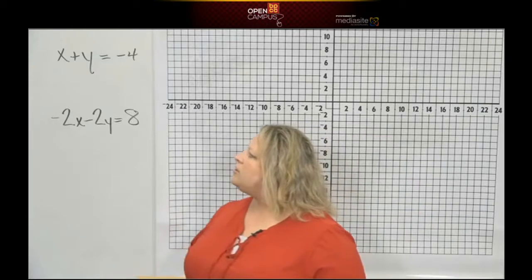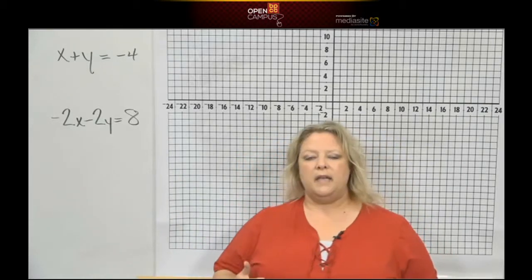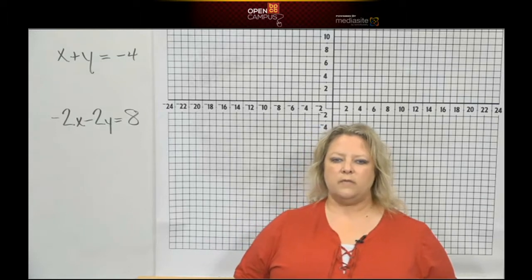Okay, here are our two lines: x plus y equals negative 4, and then negative 2x minus 2y equals 8.